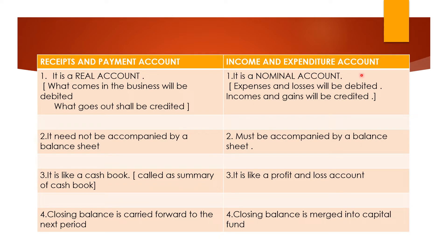Whereas income and expenditure account is a nominal account. In this case, all the expenses and losses will be debited and all the incomes and gains will be credited. On the debit side you will show all your expenses and losses, and on the credit side each and every income and gain will be recorded.